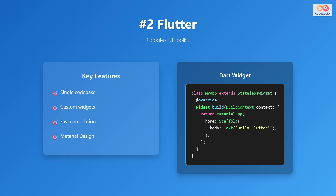Next, we have Flutter, Google's UI toolkit for crafting beautiful, natively compiled applications for mobile, web, and desktop from a single code base. Key features include a single code base, custom widgets, fast compilation, and support for Material Design. The Dart widget code block shows a basic Flutter application with a MyApp class that extends StatelessWidget. The build method returns a MaterialApp containing a Scaffold with a Text widget that displays 'Hello Flutter'.